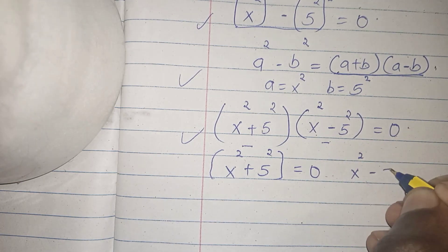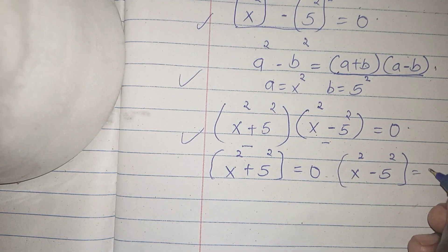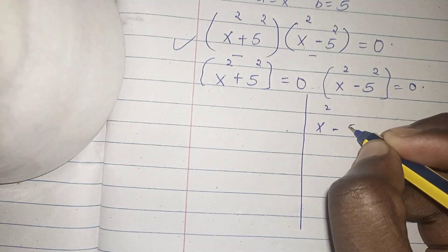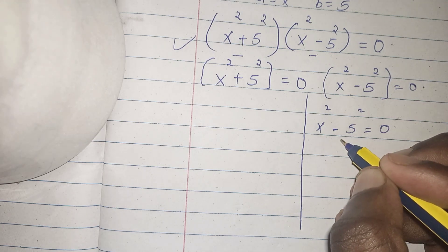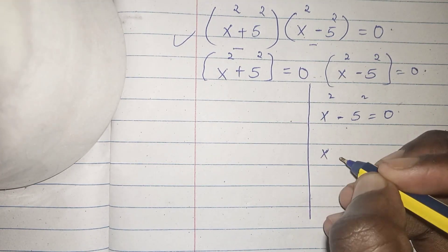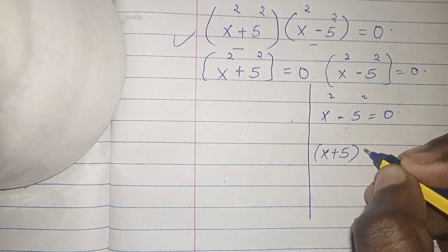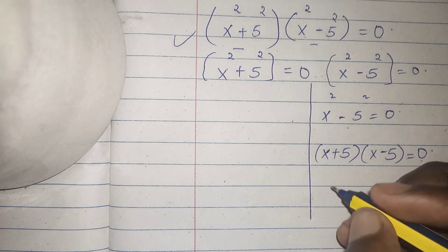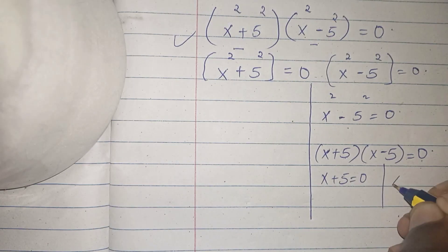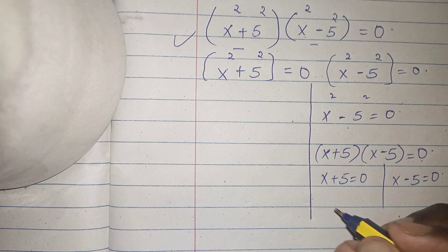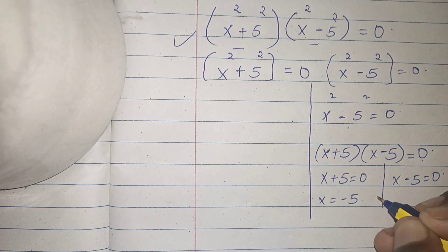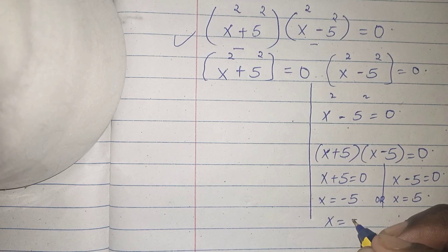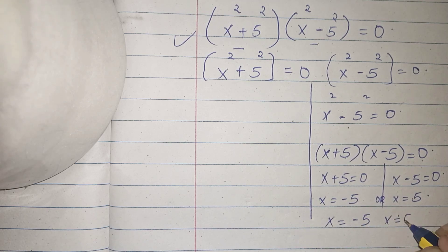We have x squared minus 5 squared equals 0, which is a perfect square. So we factor it as (x + 5)(x - 5) equals 0. This gives us two solutions: x plus 5 equals 0, and x minus 5 equals 0. Therefore x is equal to negative 5 or x is equal to 5. These are our first real solutions.